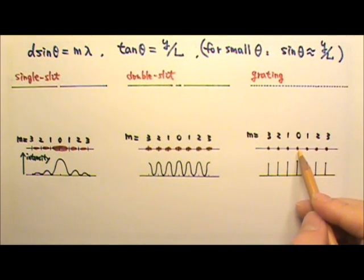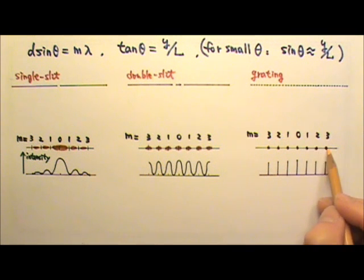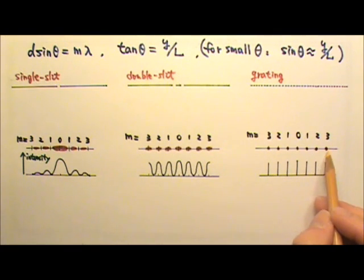For grating, we don't really talk about dark fringes because we just have bright fringes, and then it's all dark in between, so we only talk about the bright ones.